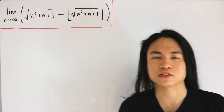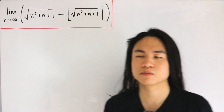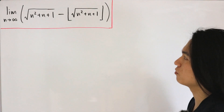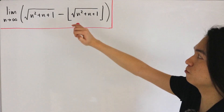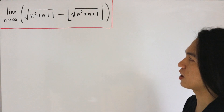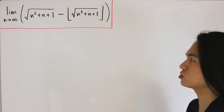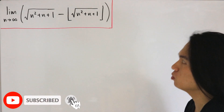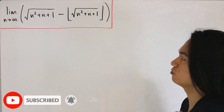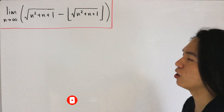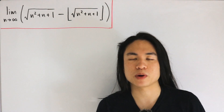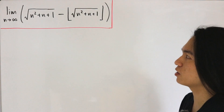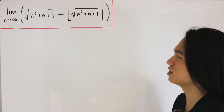We're going back to another video. Here we're actually going to be dealing with a limit involving radicals, but also dealing with the floor function. We have the limit as n approaches infinity of the square root of n squared plus n plus 1, subtract the floor of the same quantity — the square root of n squared plus n plus 1. You might think you would have to utilize the definition of the floor function in order to evaluate this limit.